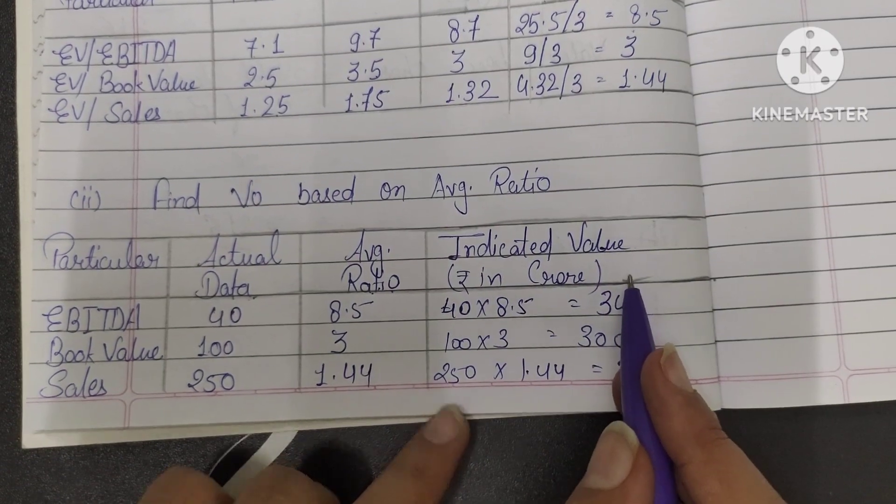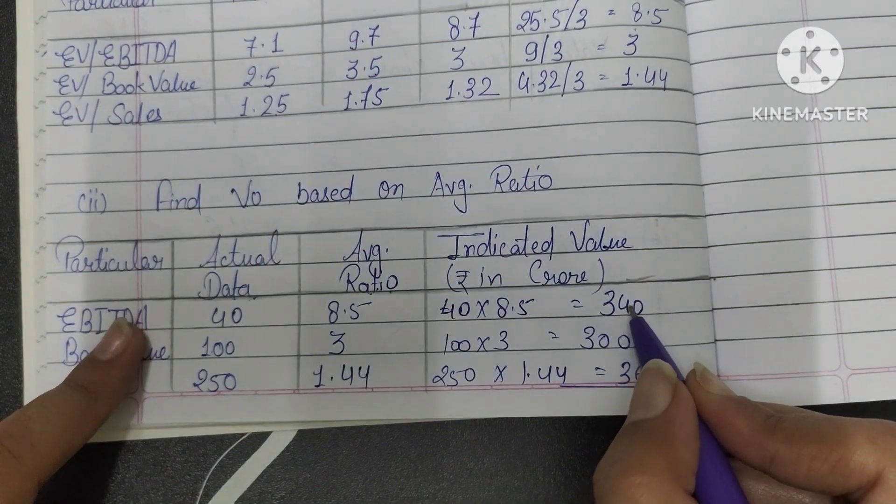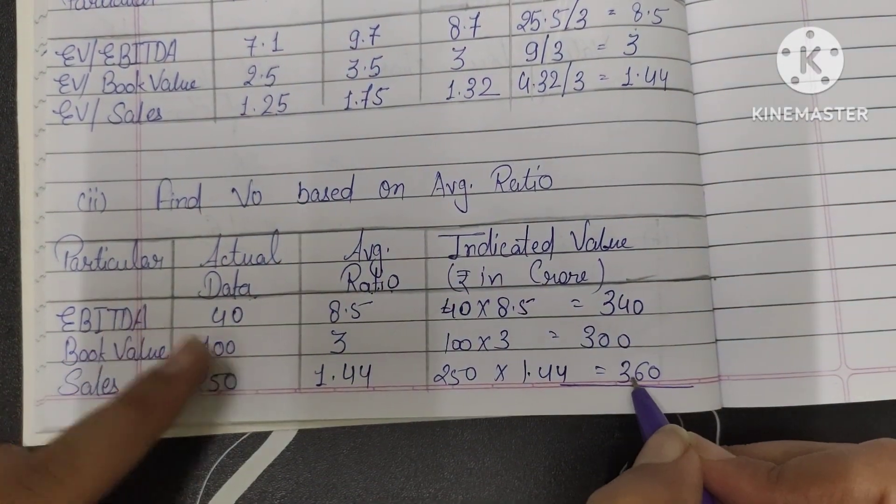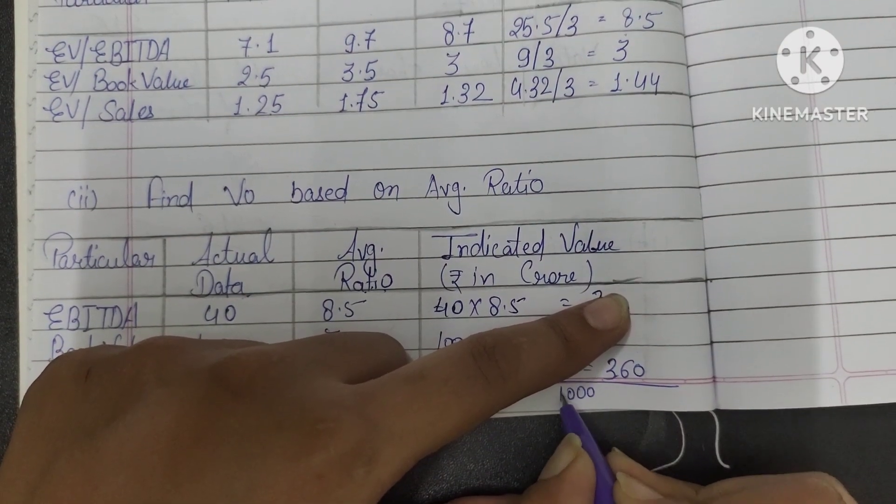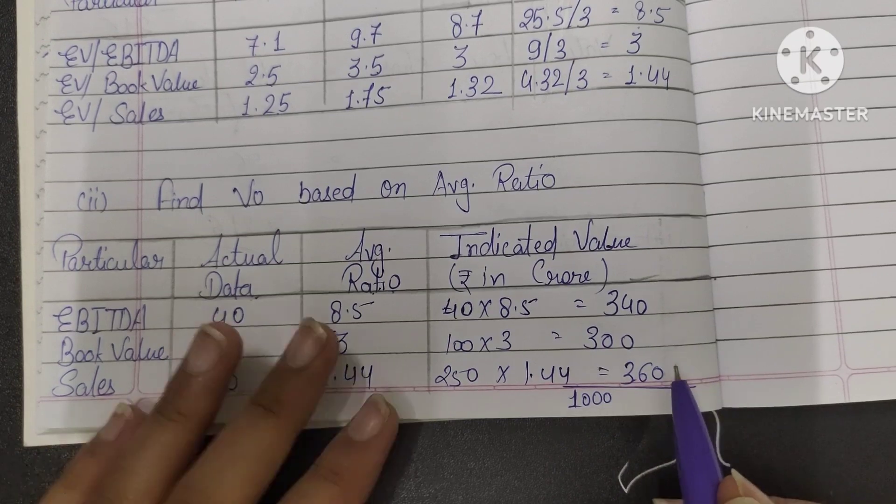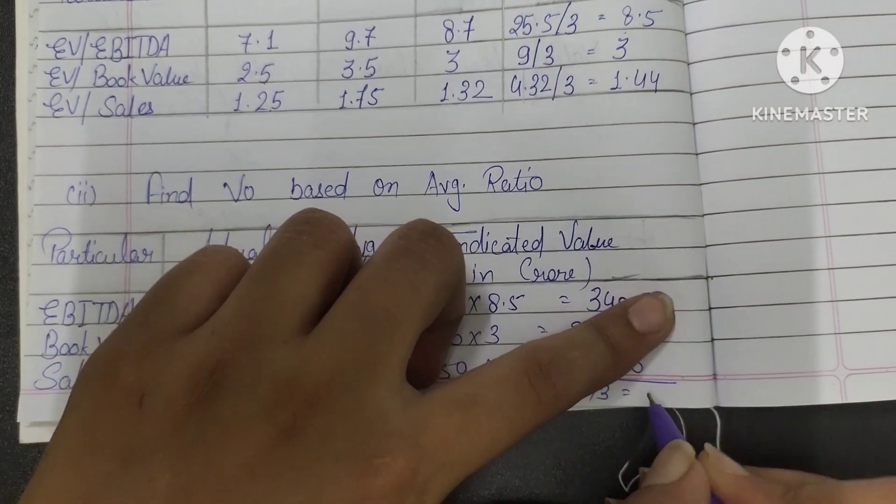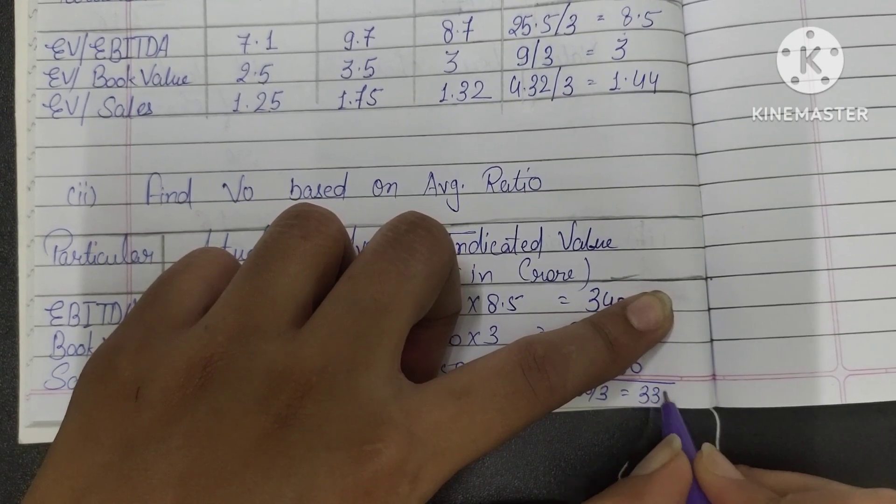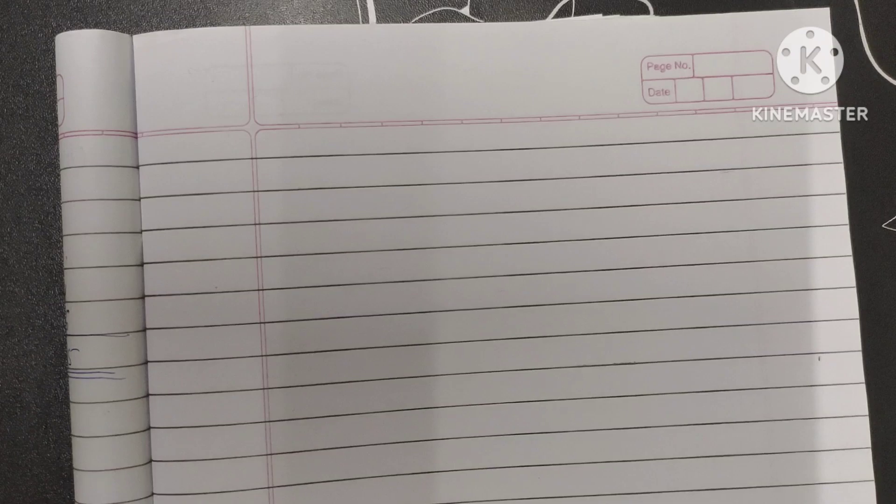We have actual data, indicated value is done. Now we will make a total. So 340 plus 300 plus 360, that is 1000. Total value, how much is coming? Total value is coming as 1000. Now we have three companies, so what will we do? Divide by 3. 1000 divided by 3, that is 333.33. So the company's value is coming as 333.